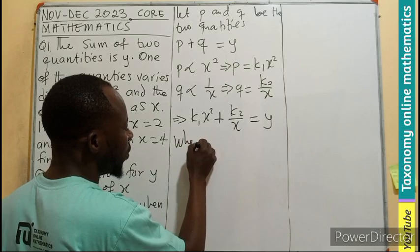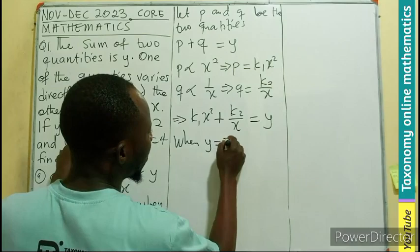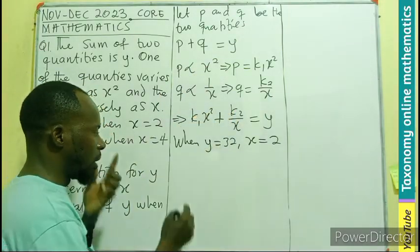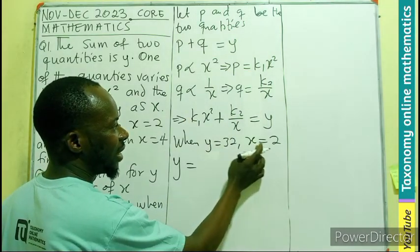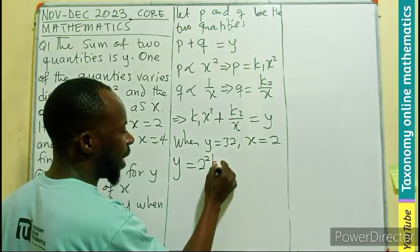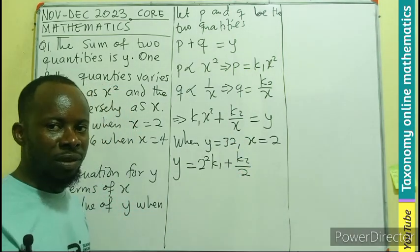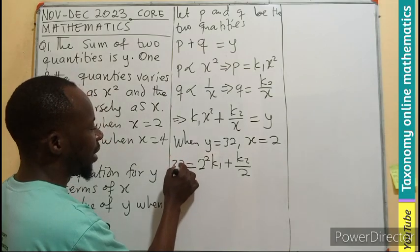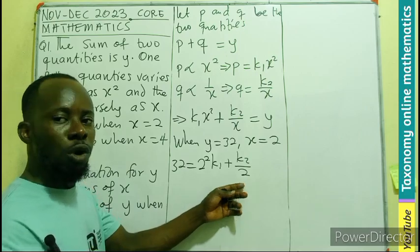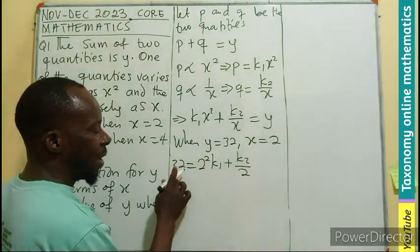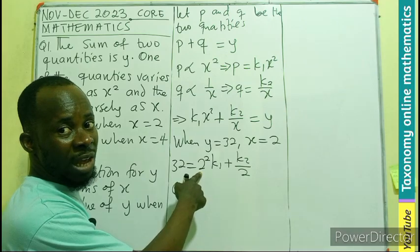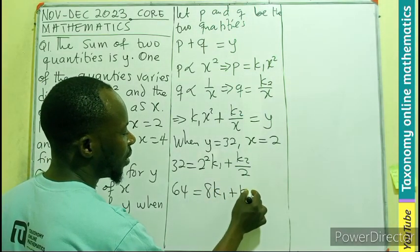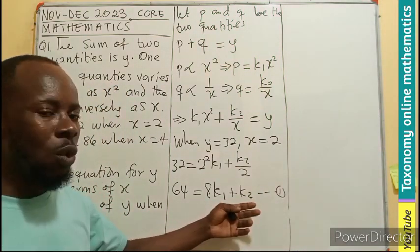So when Y equals 32, X will be 2. So let's substitute this into this equation, meaning Y will be K1X squared. So we have 2 squared times K1 plus K2 divided by X, which is 2. So Y is 32. Let's keep that as 32. We have a fraction with denominator 2. So let's multiply through by 2. So 2 times this will be 64. This is going to be 4. 2 squared times 2 will give us 8K1 plus K2. That will become the first equation, which is having two unknown variables to deal with.